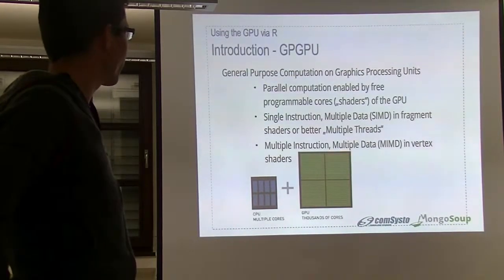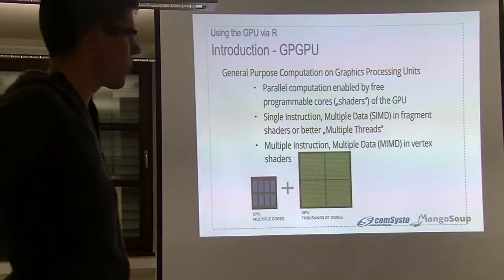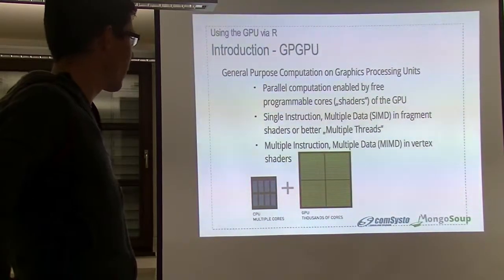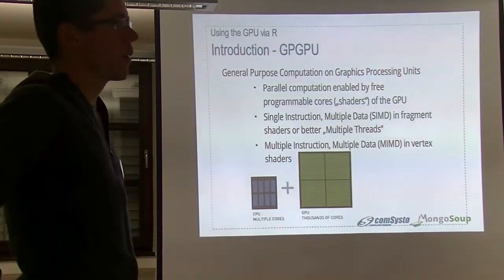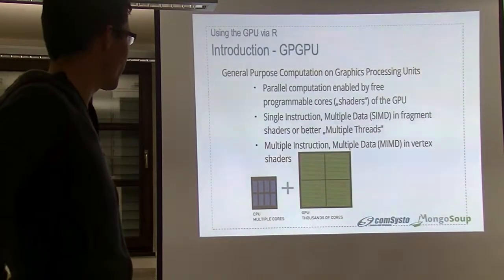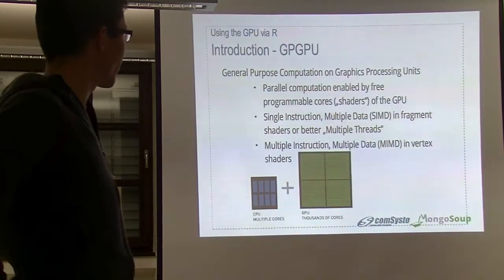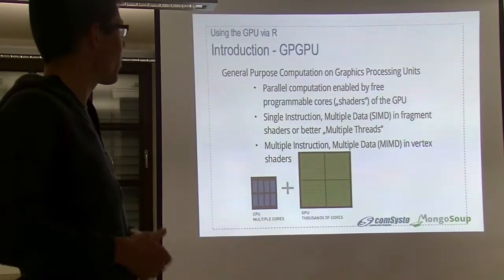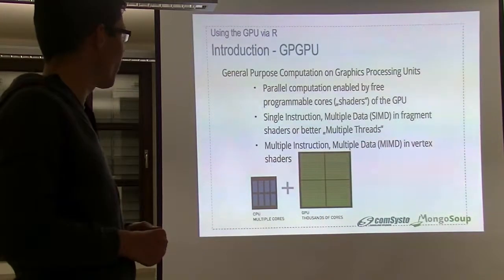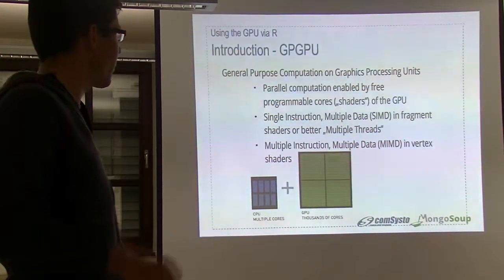In general, the advantages of GPU computing are that you have a lot of cores on your graphics card — thousands of cores — because the gaming industry developed many powerful graphics cards. Then they had the idea to make the cores programmable and make them available for other tasks, not only graphics. In the standard setting, you combine CPU computing and GPU computing, allowing a lot of parallelization.